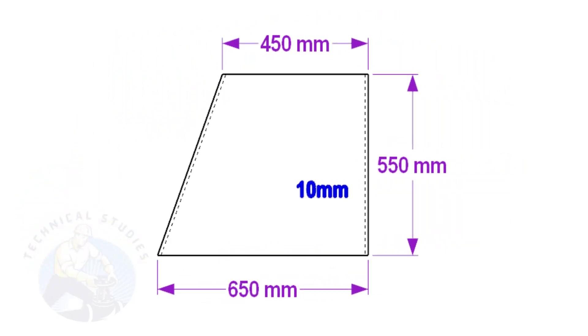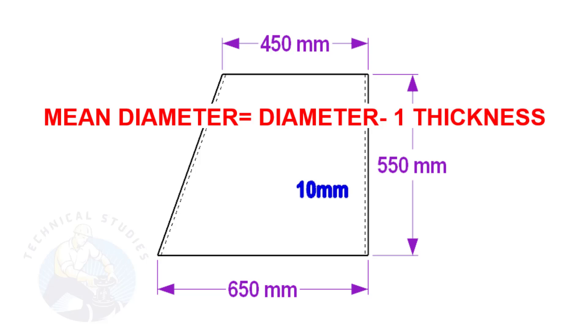To make a layout, we need to calculate the circumference of the top and bottom sides of the cone. To calculate the circumference, we need to know the mean diameter of the cone's bottom and top. Deduct one thickness from the diameter to get the mean diameter.